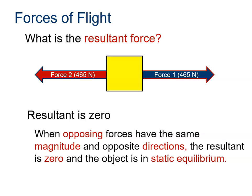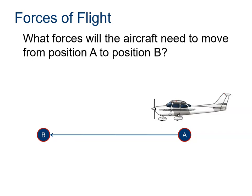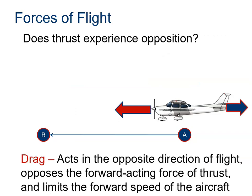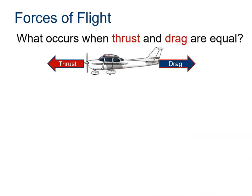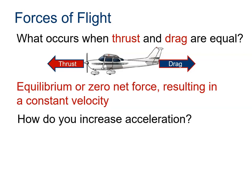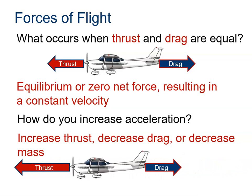What happens to an airplane? An airplane needs to move from A to B, so we apply a force in that direction — thrust. When an aircraft is in equilibrium, thrust equals drag, and drag acts opposite to thrust. Thrust equaling drag means constant velocity — not that it's not moving, just that it's not accelerating. To increase acceleration, you either increase thrust, decrease drag, or, per Newton's second law (F = MA), decrease the mass.